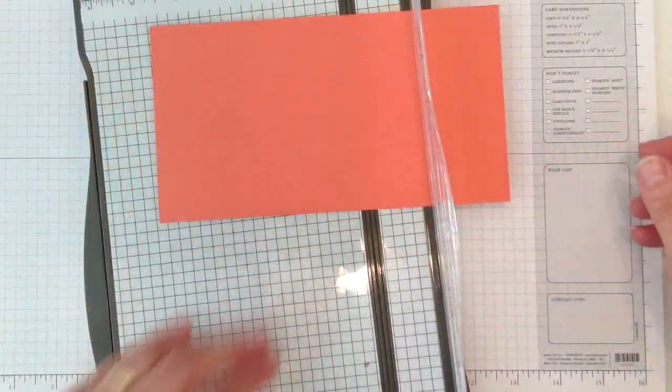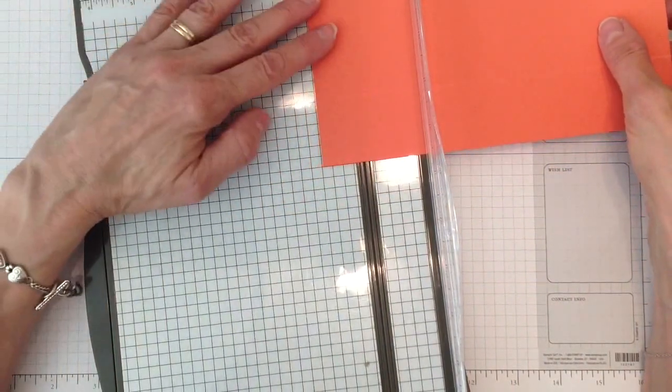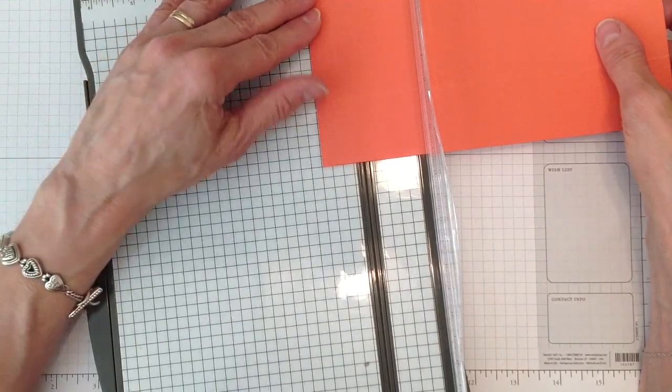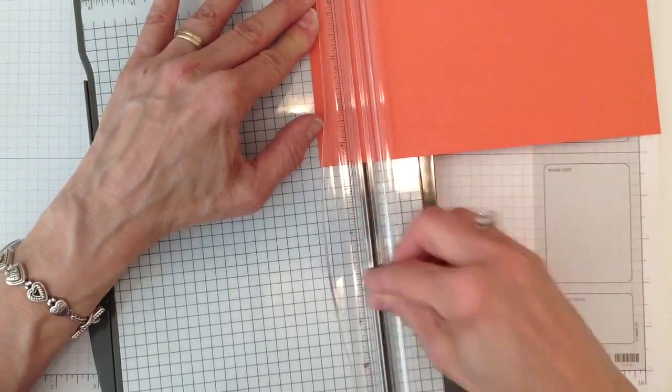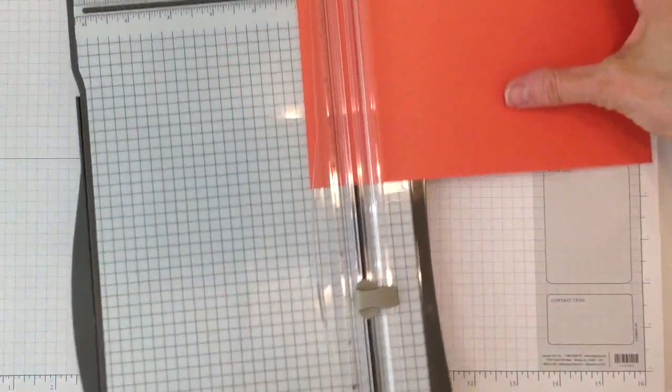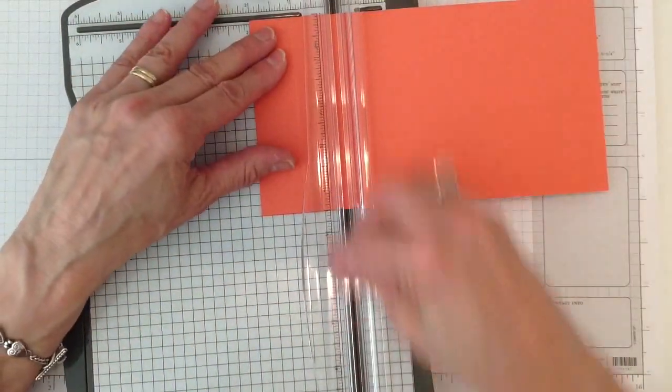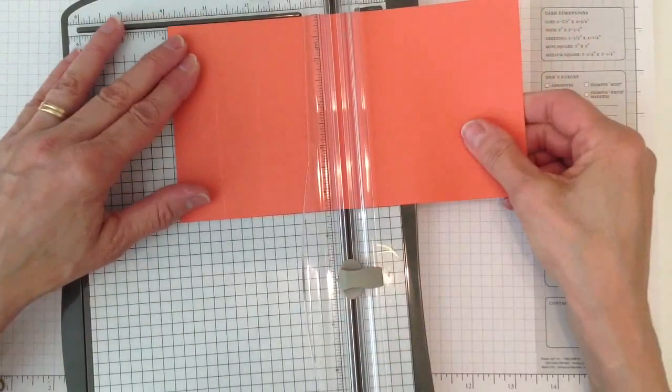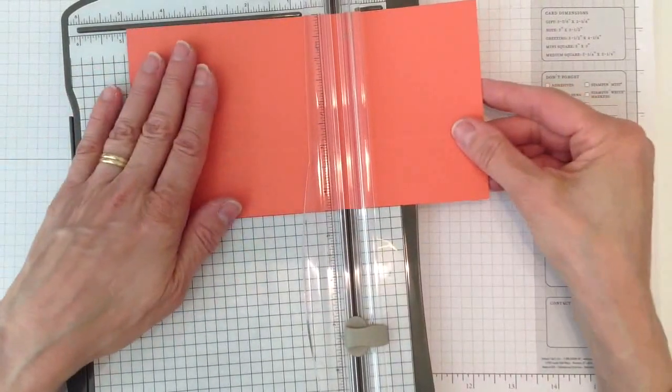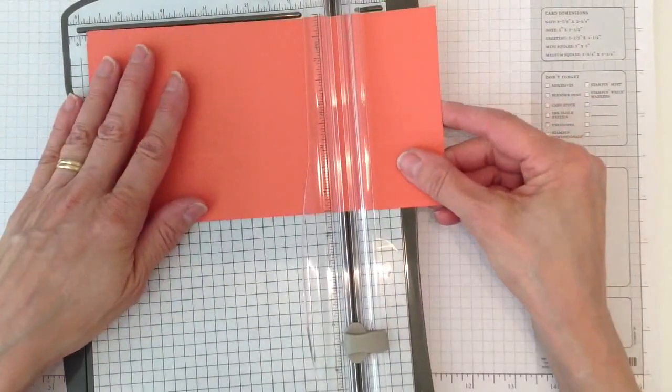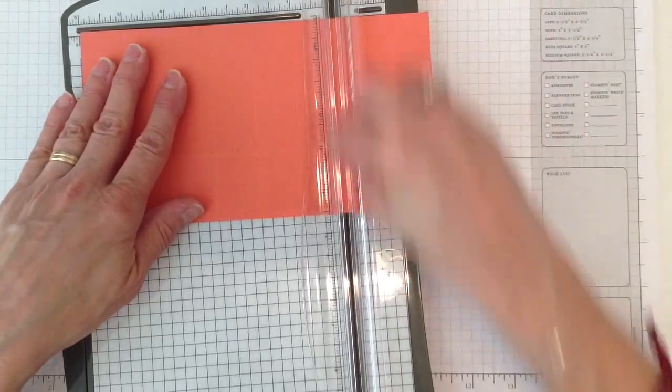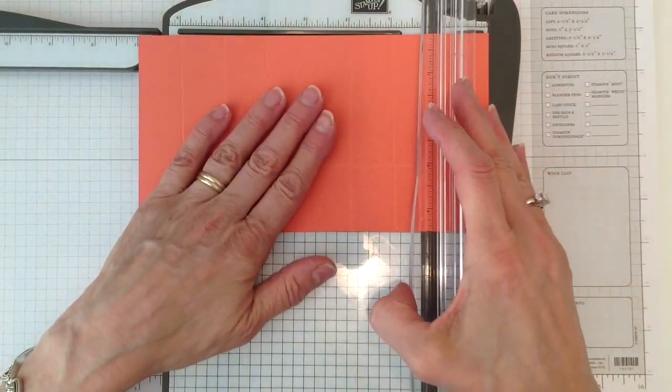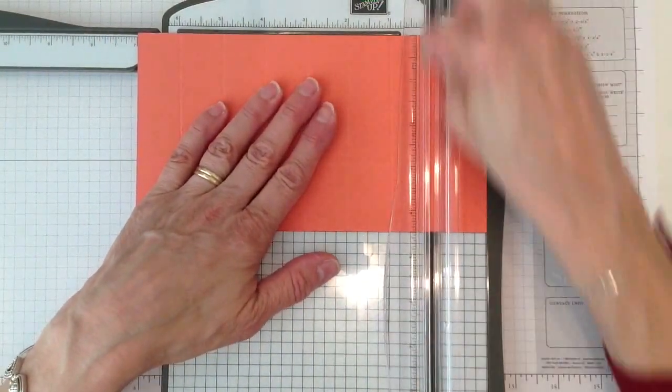And then this is so easy because what we're going to do now is we're going to score it at one, two, three, four, five, six, seven, and eight. So let's go ahead and do that. So it's one, two, three, four, five, six, seven, and then eight.